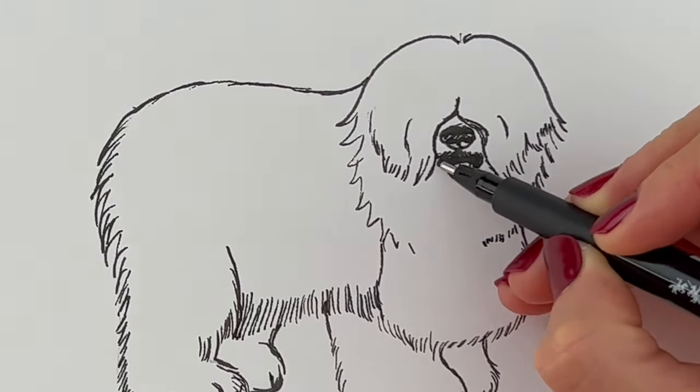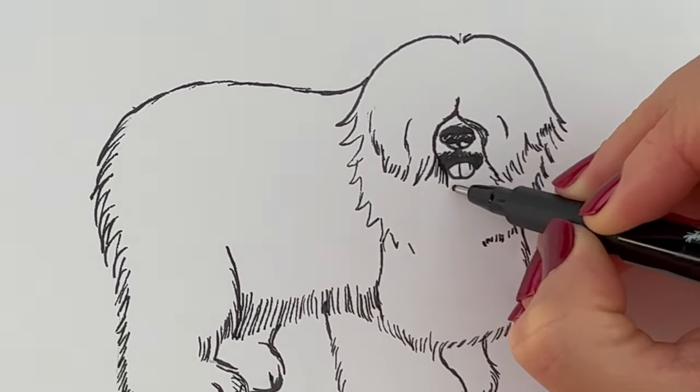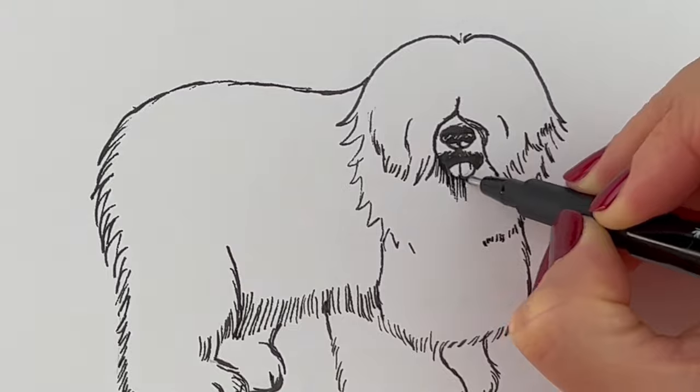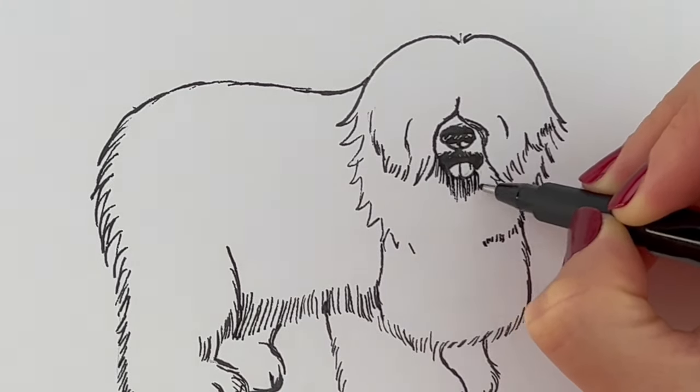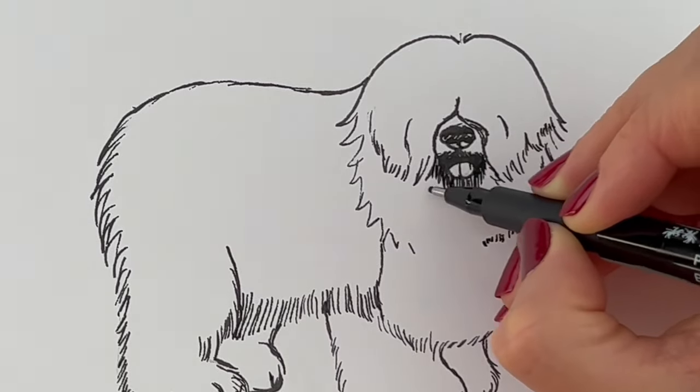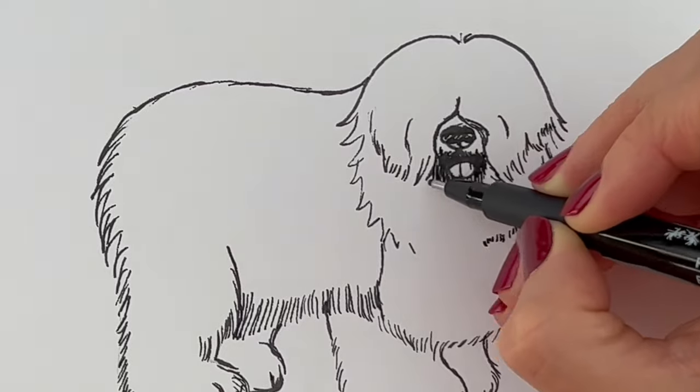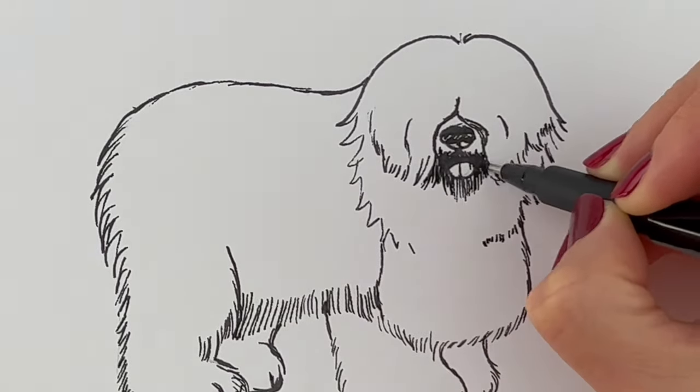So just underneath the tongue. We're going to be drawing some fur coming downwards. We're going to make this area a little bit darker. It tends to get a little bit dirtier where it's been eating food. So I'm just going to draw a little bit darker around here. And underneath these areas.